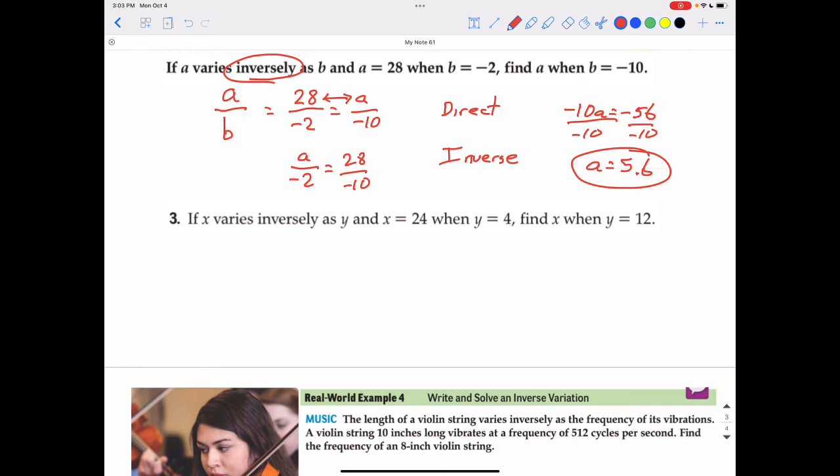Next example is very similar. It says x varies inversely as y. So that means I can start with a direct variation and then trade the numerators to make an inverse variation. x is 24 when y is 4. I'll set that equal to find x when y is 12. That is direct variation. Inverse variation means I'm going to swap either the numerators or the denominators. So I'll do the numerators. That means it will be x over 4 equals 24 over 12. Cross multiply. So 12x equals 96. Divide by 12, and we get x equal to 8.